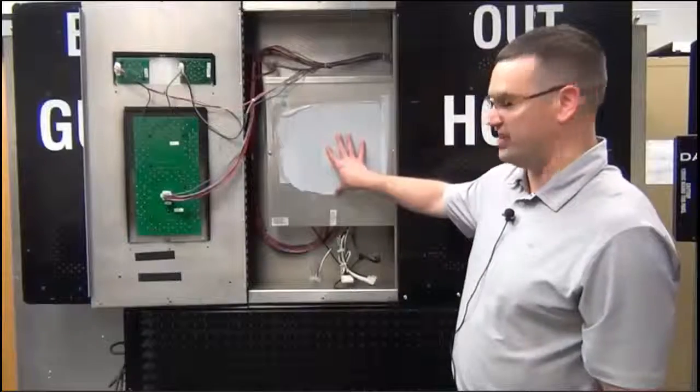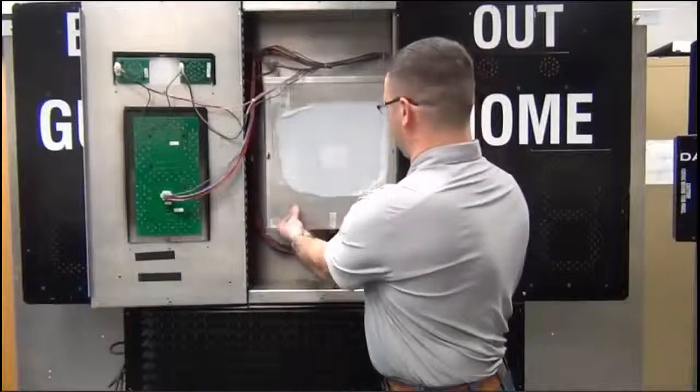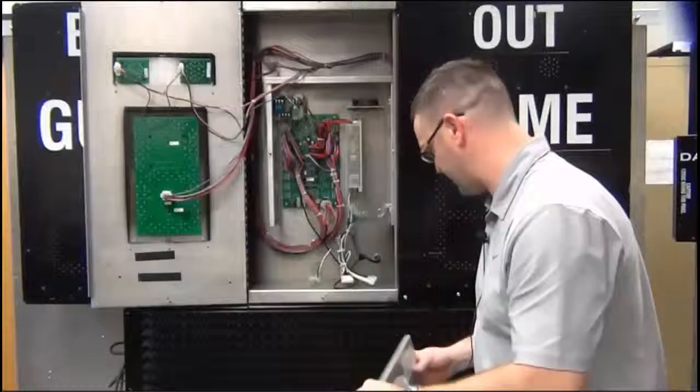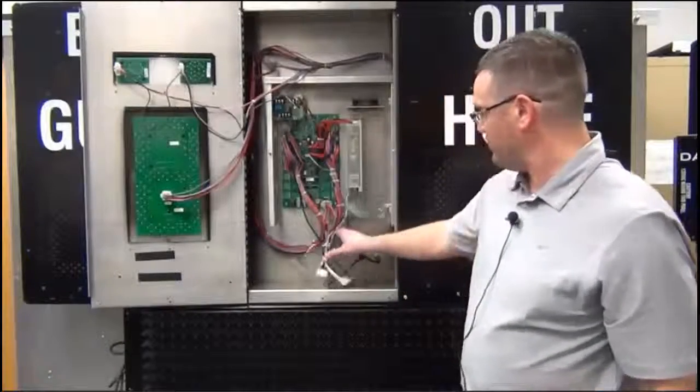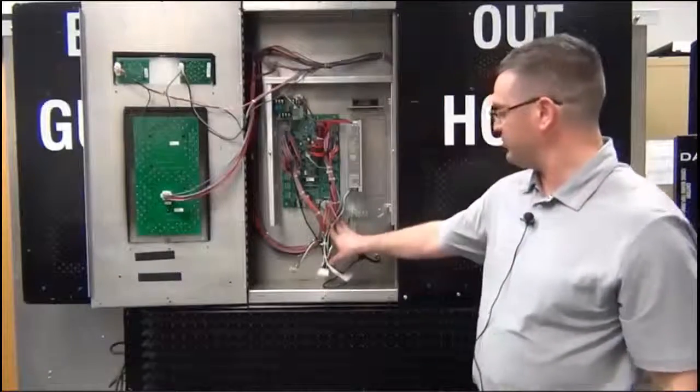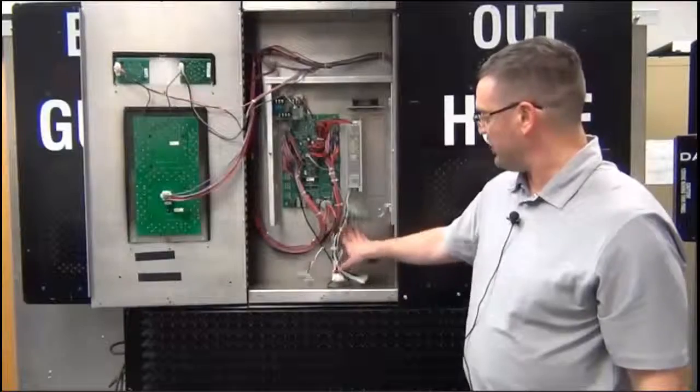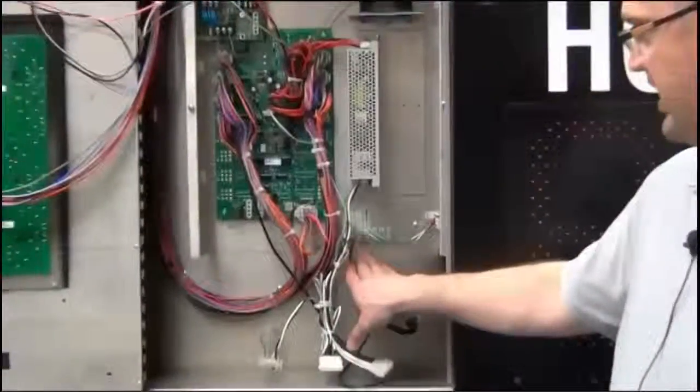If I open up the driver tray and we get into here, this is where we have to hardwire our power in. So with the indoor scoreboards, we have a power cord. Outdoor, we actually have to land our power wires onto the terminal block.